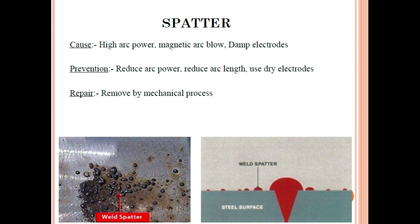Spatter is a very common problem in SMAW welding. Causes include high arc power, magnetic arc blow, and damp electrodes. Prevention: reduce the arc power, reduce the arc length, and use dry electrodes as per the manufacturer's recommendation. If the arc length is too long, spatter will increase. Repair: remove by mechanical process.